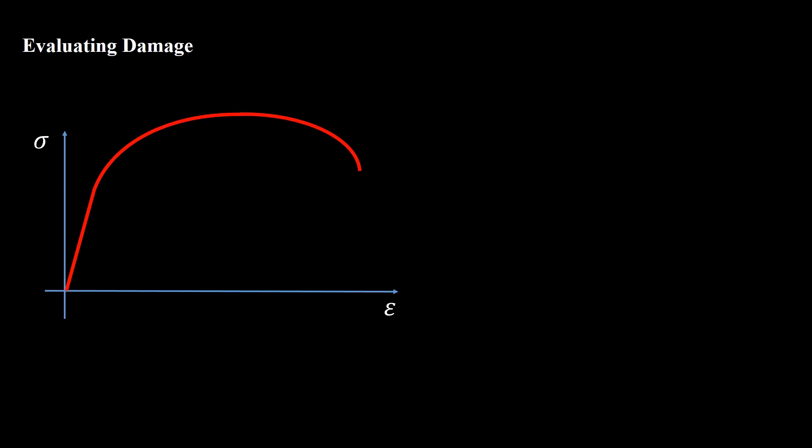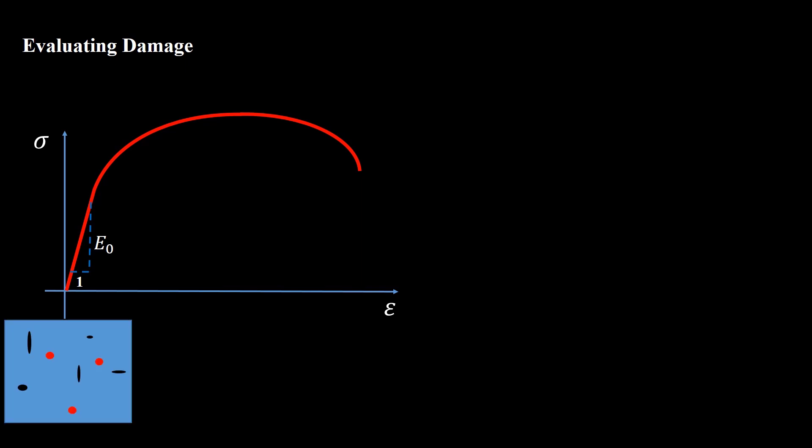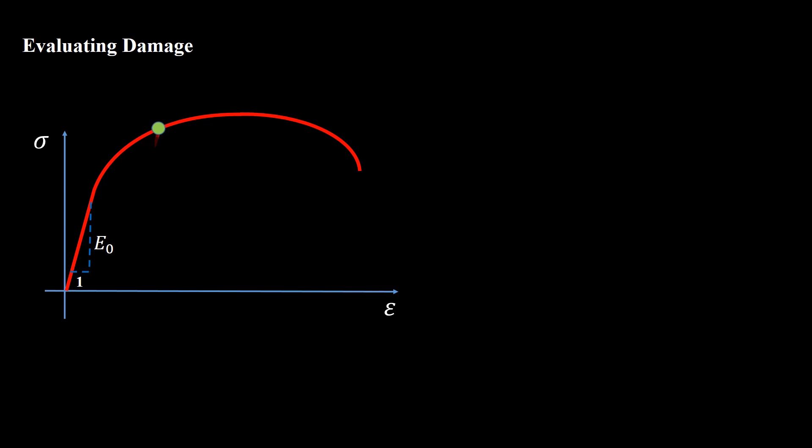Reduction of the Young's modulus of the material can be used to evaluate the damage progress in a material. This diagram shows the stress-strain curve of a metal. The perfect material shows constant slope in elastic loading or unloading, but as the damage grows, the slope of the unloading or elastic loading, which shows the Young's modulus, decreases.